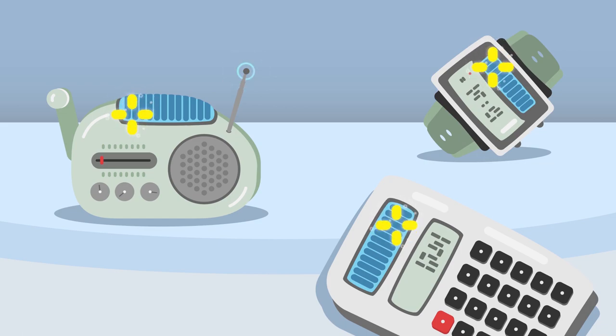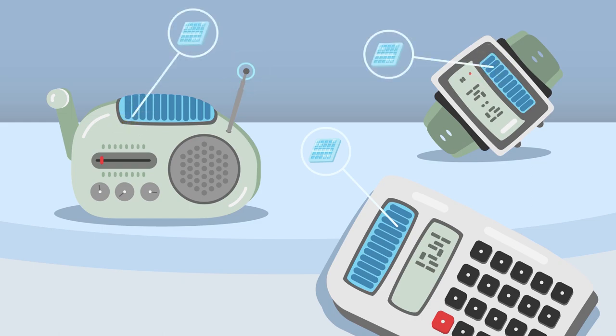Small solar panels became popular once people began using them to power things, like calculators, radios, and watches, that use very little energy.